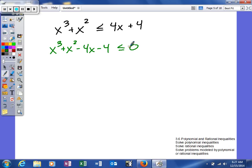Okay, so now we have a nice little polynomial. I need to find the critical numbers. They're only going to be zeros. I don't have any variables in the denominator, so I'm going to factor by grouping.